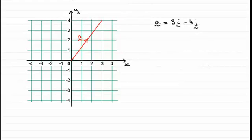Now, when it comes to finding the length of this vector, I can use Pythagoras' theorem. I can think of a right angle triangle around here where the lengths of this side is 3 and the length of this side is 4 units.